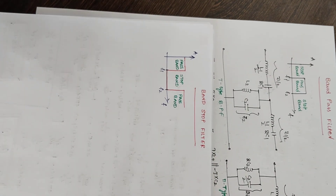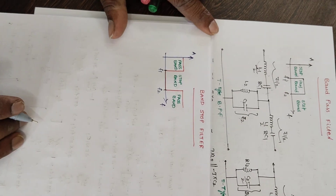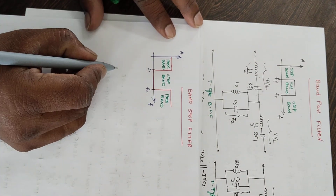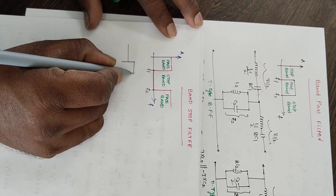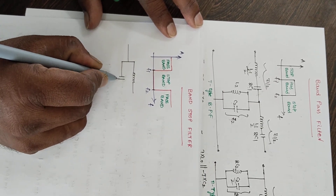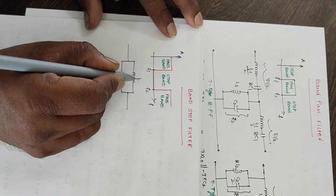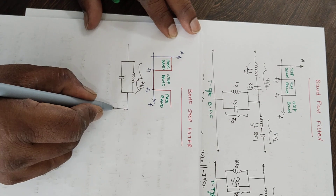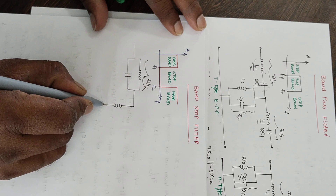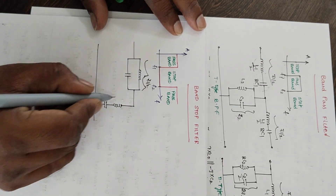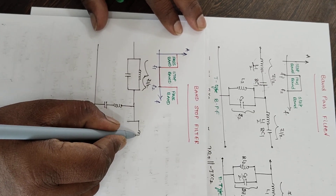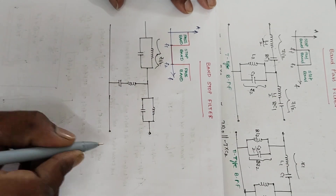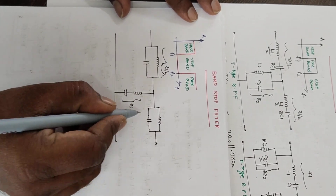Coming to the construction point of view, just by interchanging the series and shunt branches in the band pass filter we get the band stop filter. The T-type network can be drawn like this: the shunt branch is a series resonant circuit and the series branch is a shunt resonant circuit. The total series arm is Z1, so each half-arm is Z1 by 2, and the shunt arm is Z2.